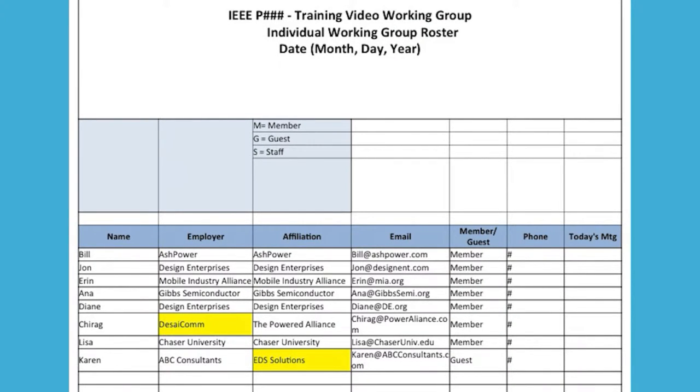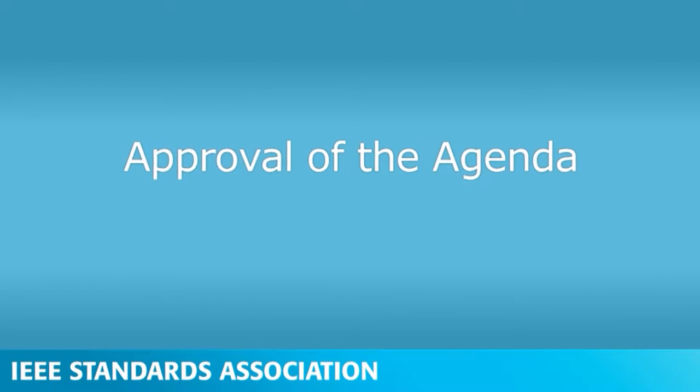Out of eight voting members, all eight members are present. So let's proceed with the next agenda item, which is the approval of the remainder of the agenda. Do I hear a motion to approve the agenda? So moved. Do I hear a second? I second the motion. Any discussion to the motion on the table? Hearing no discussion, I call for a vote. All those in favor? Aye. All those against? Anyone wishing to abstain? Motion approved unanimously. Now we have an approved agenda to work by.